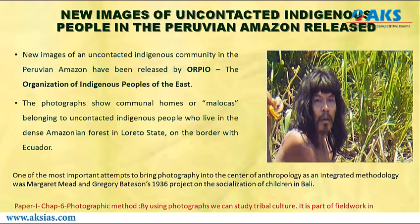These are all articles which appeared in recent newspapers. The first article — new images of uncontacted indigenous people in the Peruvian Amazon — is relevant to Paper 1, Chapter 6, on the photographic method. By using photographs we can study tribal culture. This is part of fieldwork in visual anthropology, and the photographic method was proposed by Margaret Mead.